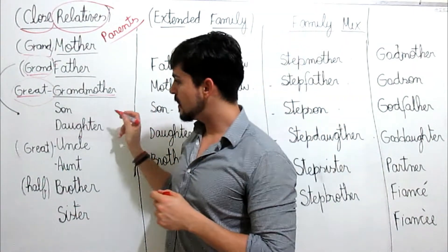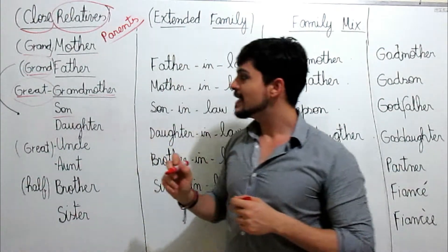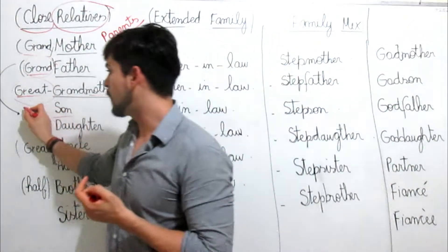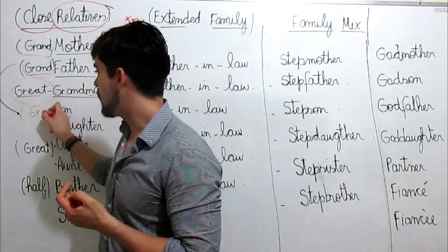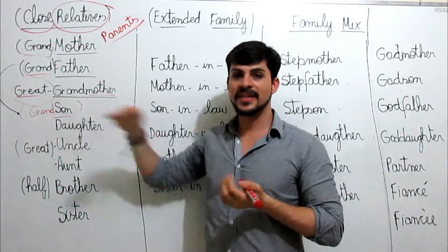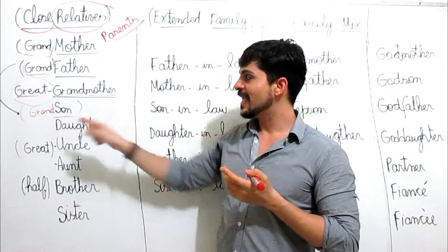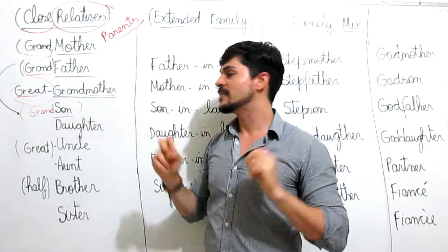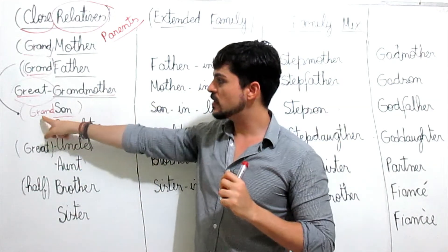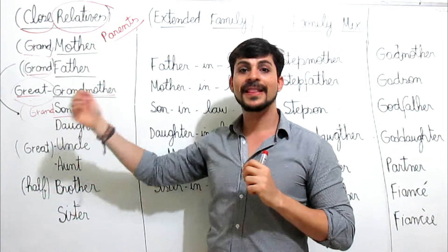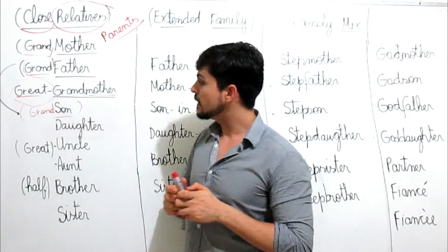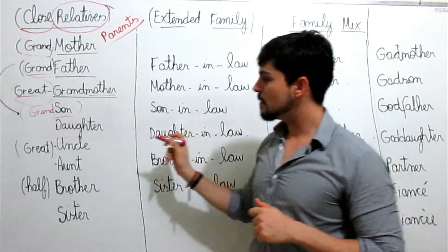The next word on the list is 'son,' which means 'filho' — son. You can also add the word 'grand,' just like we did with grandfather and grandmother. Since 'grand' refers to that grandparent relationship, who would be the son of a grandfather? It would be the grandson. Grandparents are said to be like second parents. So 'grandson' means 'neto,' and simply 'son' means 'filho.'